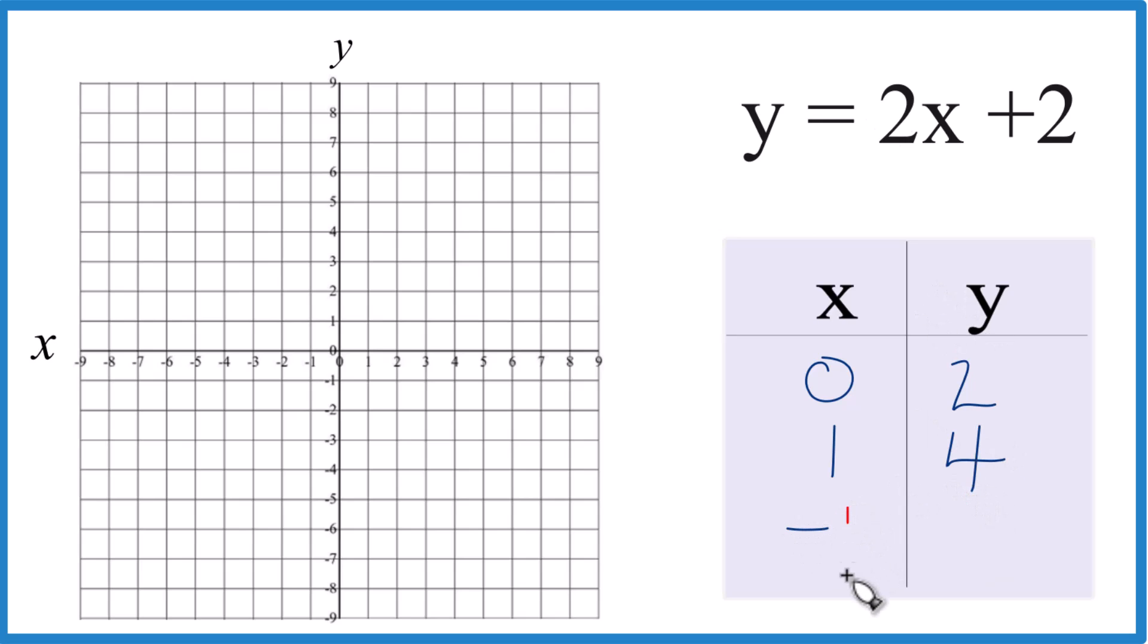And how about negative 1? 2 times negative 1 is negative 2. Negative 2 plus 2 is just 0. So these are the points we're going to graph for our line here, y equals 2x plus 2.